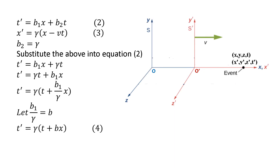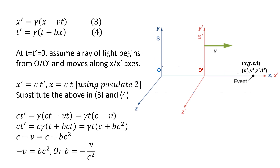With B2 equals gamma, substituting into equation 2, we get T prime equals B1·X + gamma·t. We can write this as T prime equals gamma·t + B1·X. Taking gamma as a common factor: T prime equals gamma·(T + (B1/gamma)·X). Since B1/gamma is a constant, call it B, we get T prime equals gamma·(T + B·X). We thus have the equations X prime equals gamma·(X minus V·T) and T prime equals gamma·(T + B·X).